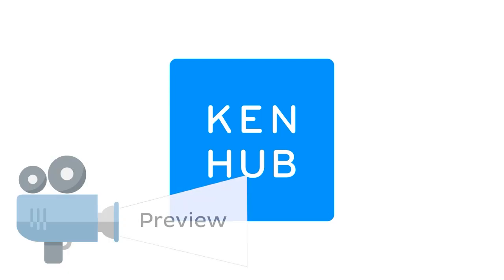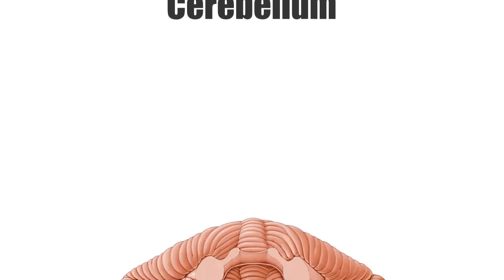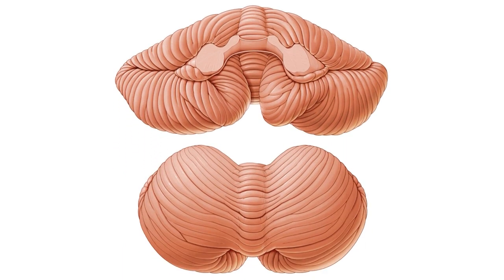Hello everyone, this is João from KenHub and welcome to another anatomy tutorial where this time we're going to be talking about the cerebellum. So what we're going to be doing is exploring mainly these two images that you see now on the screen. On the top image we're looking at the caudal view of the cerebellum while on the bottom image you can see the cranial view of the cerebellum. There is a lot to learn about this very beautiful and exciting structure of your brain, the cerebellum.